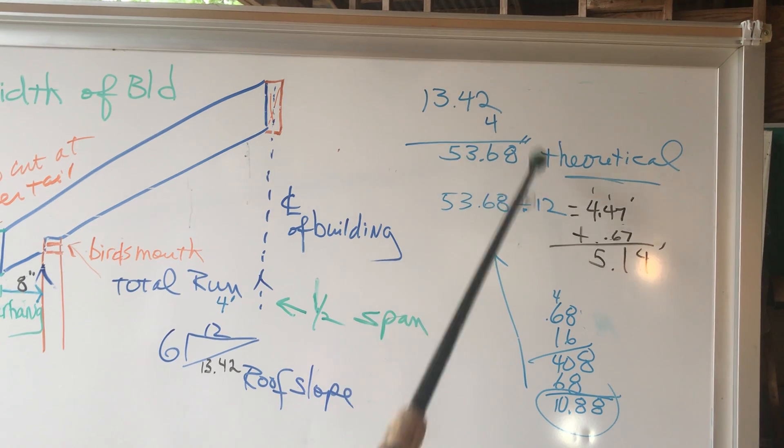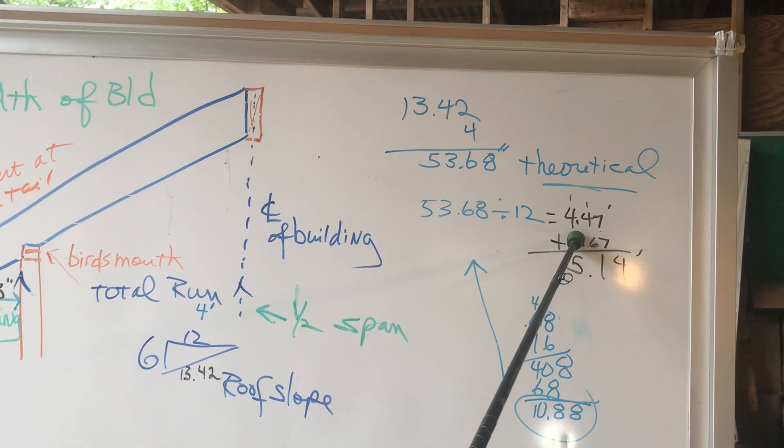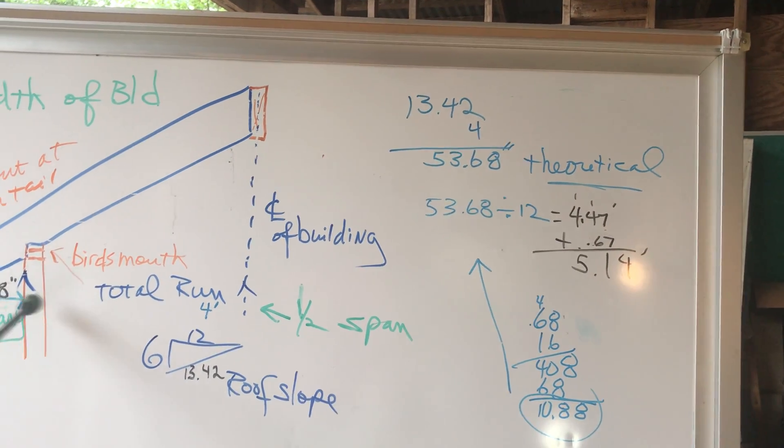If I want that expressed in feet, I divide that by 12. And now, I get 4.47 feet. Now, the overhang is 8 inches.